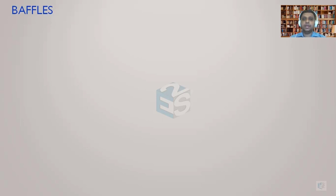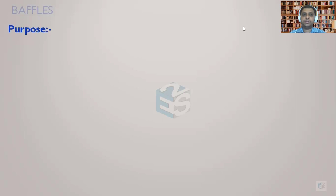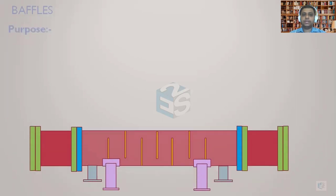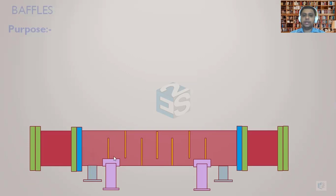We are going to discuss a very important component of mechanical design of a heat exchanger: baffles. Let's understand the basic purpose of baffles by first looking at how the baffle arrangement would look. These yellow color plates represent baffles. For better understanding, we have not shown the skeleton assembly — that is, the tie rods, spacers, and tubes — just the baffles, along with the inlet nozzle and outlet nozzle.